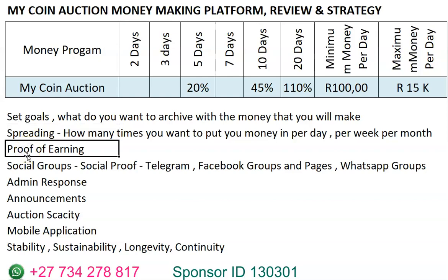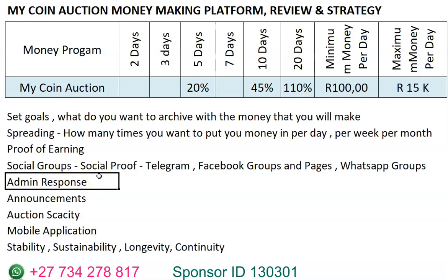You're also supposed to be looking at proof of earning, which I'm also going to be helping you with by attaching you to groups that I have joined, where people share their proof of earning on Telegram groups, Facebook groups, Facebook pages, and WhatsApp groups. You also need to look at admin response, which you will actually be able to see from inside the system.